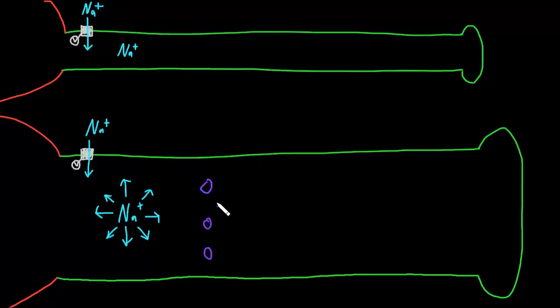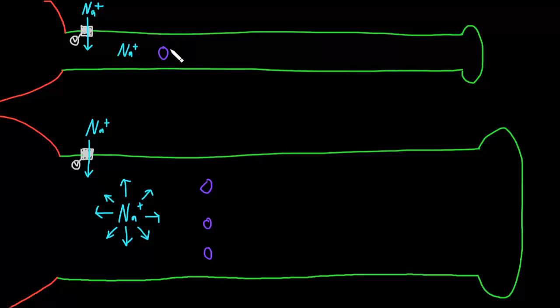And the concentration of these obstacles would be the same in the smaller diameter axon. But of course there's less cytoplasm, so there would be fewer of these obstacles, but the same number for any given volume of cytoplasm.